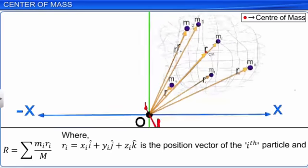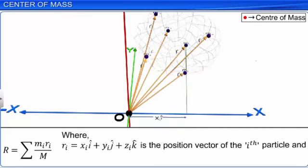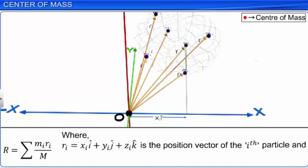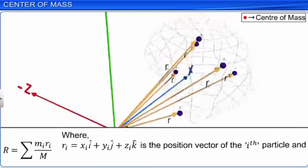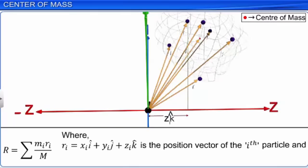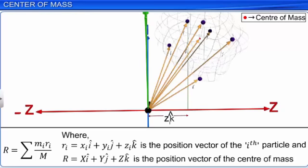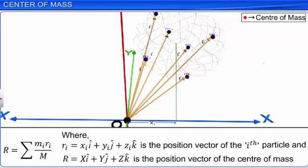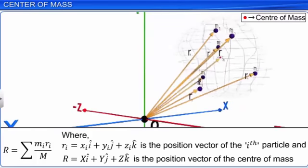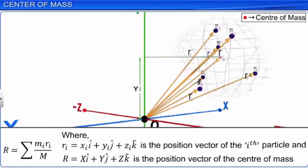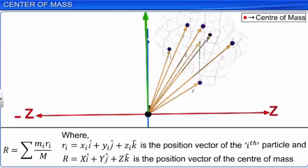Here, Ri equals Xi·i-hat + Yi·j-hat + Zi·k-hat is the position vector of the i-th particle, and R equals X·i-hat + Y·j-hat + Z·k-hat is the position vector of the center of mass. If we take the center of mass as the origin of our frame of reference, then Sigma(Mi·Ri) equals zero. This equation can be split into three equations: Sigma(Mi·Xi) = 0, Sigma(Mi·Yi) = 0, and Sigma(Mi·Zi) = 0.